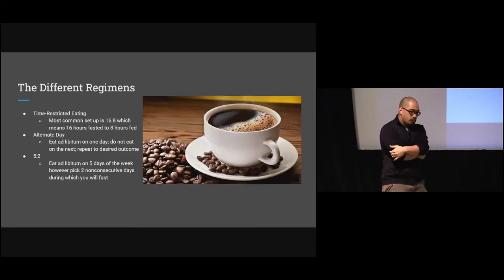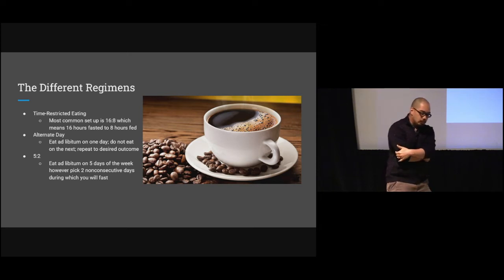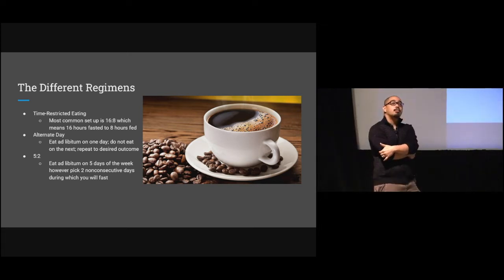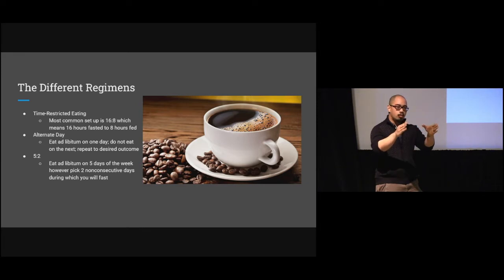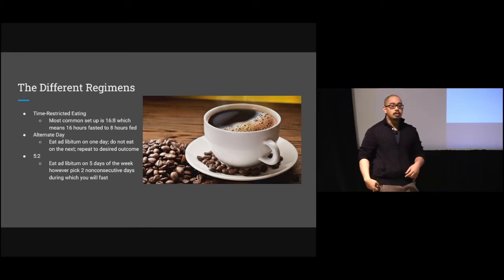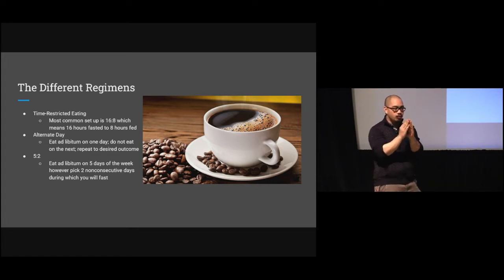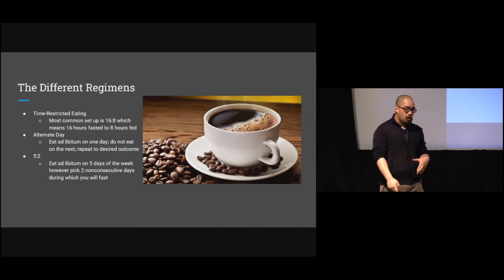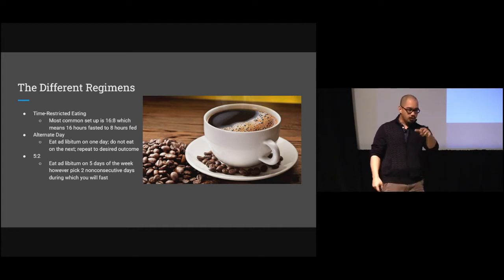We're going to talk about three different regimens. Time-restricted eating — that's the one where you skip breakfast, or more precisely, there's a 16-hour window where you're not going to eat and an eight-hour, six-hour, or four-hour window where you do eat. Get all your calories in within this narrow space instead of three meals a day.